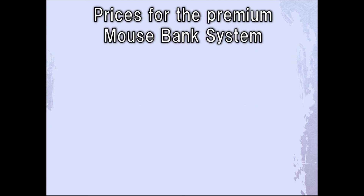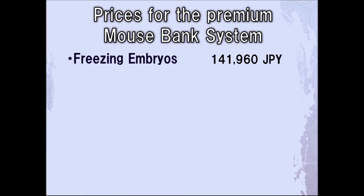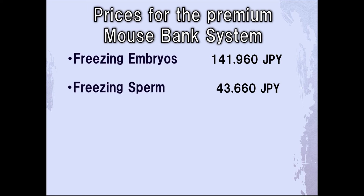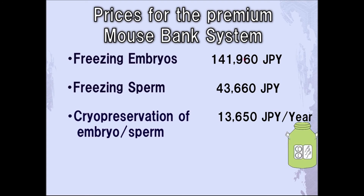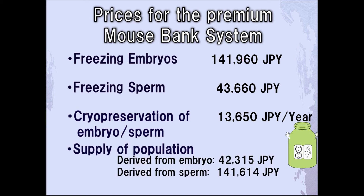Next, the prices for our premium mouse bank system are as follows. Embryo freezing is 141,960 Japanese yen. Sperm freezing is 43,660 Japanese yen. Embryo or sperm cryopreservation is 13,650 Japanese yen. Producing a population derived from embryos is 42,315 Japanese yen, and producing a population derived from sperm is 141,614 Japanese yen. Again, these prices do not include the shipping fees.